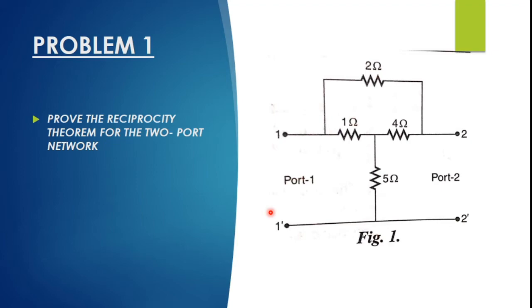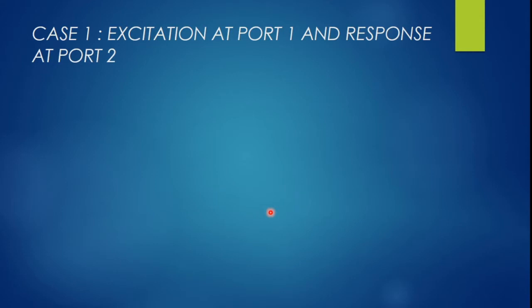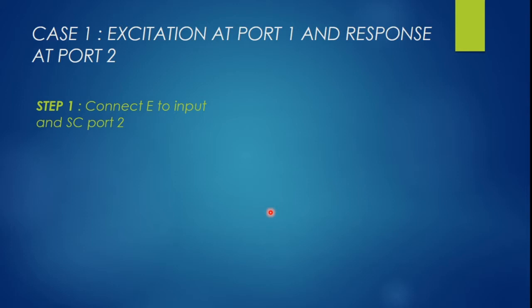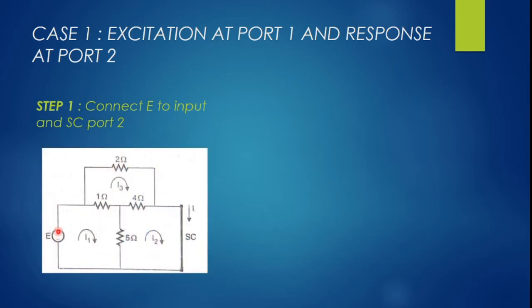Now let us start with Case 1. I am going to provide the excitation at port 1 and measure the response at port 2. I connect the voltage source E to the input and short-circuit port 2 in order to measure the output. This is similar to a mesh analysis, so we can assign three currents: I1, I2, and I3. Now let us apply mesh analysis to find the output for Case 1.